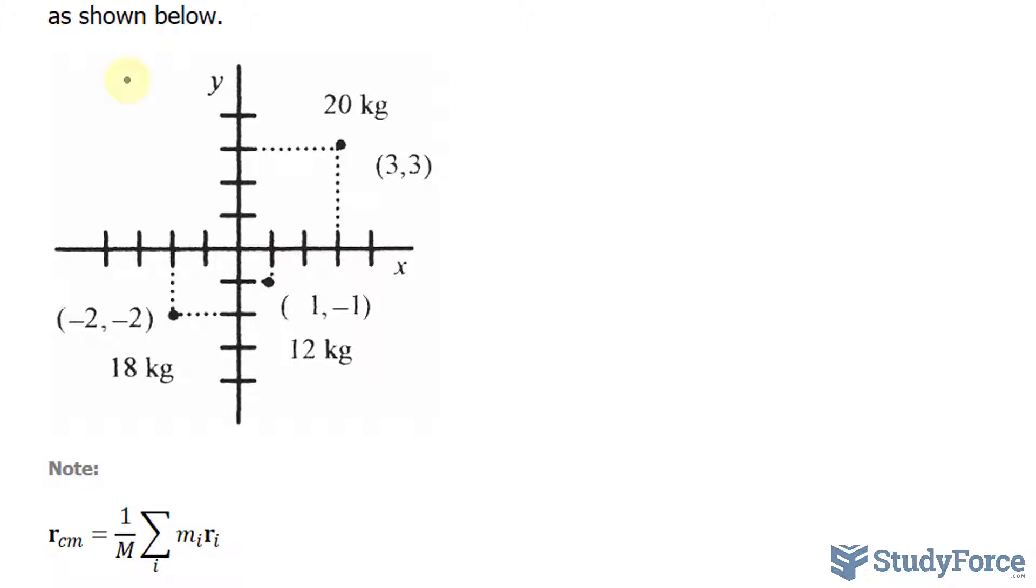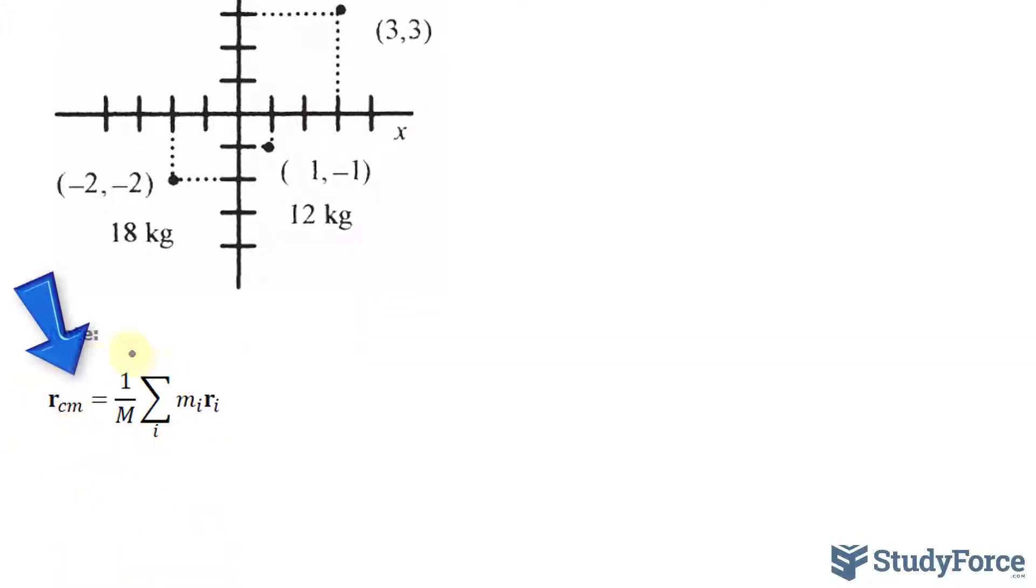To calculate the balance point, or the center of mass in this case, we'll be using the formula shown underneath. And notice that r in this formula is written in boldface, which means that it is a vector. So it should have two components, one for x and one for y.